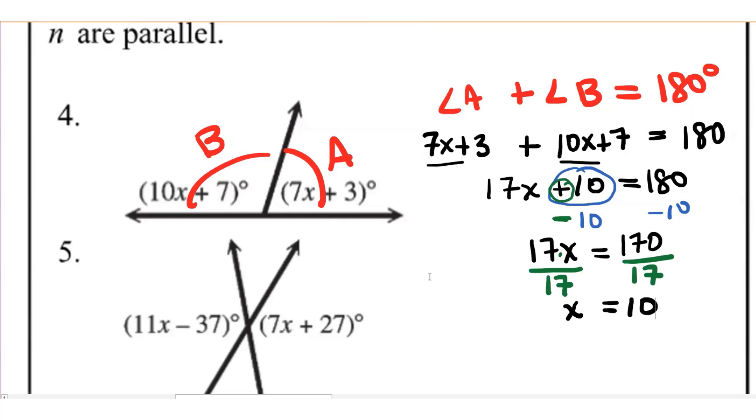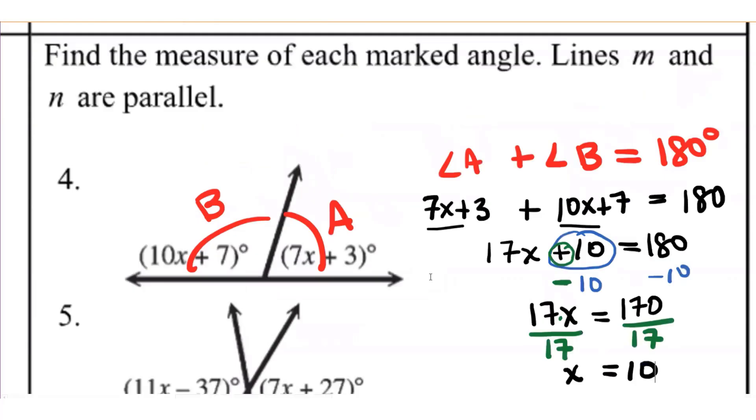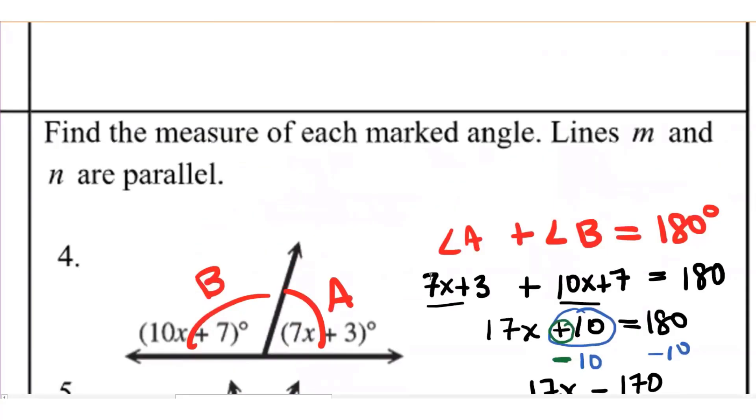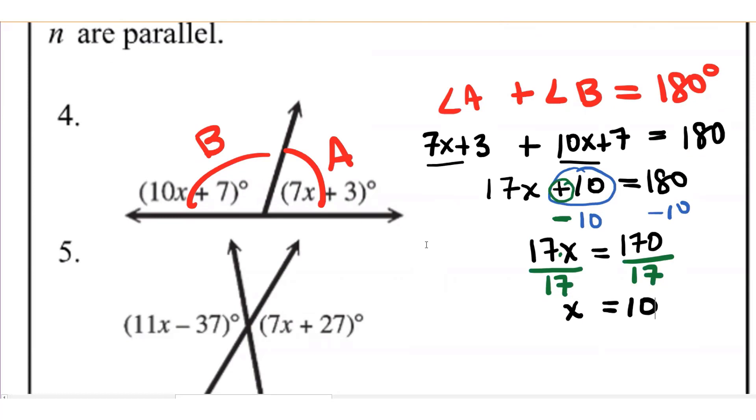Now, whenever you're working on an application problem, a word problem, or a diagram like this one, make sure that once you solve for x, you go back to the beginning and check for what you were being asked to find. We're being asked to find the measure of the angles, not x. So if you enter the value of x, that's really frustrating in my labs because you get it wrong. Oh, darn it. I was supposed to find the angle. So how do we find the angles? That's right.